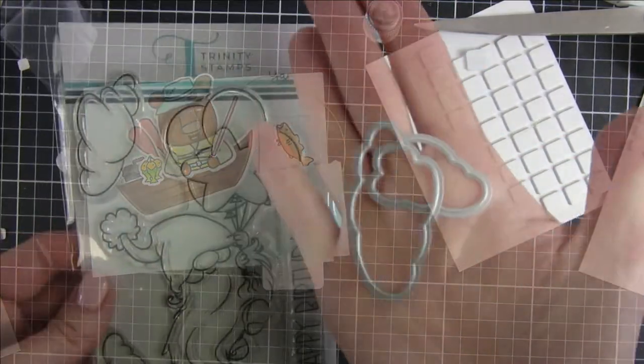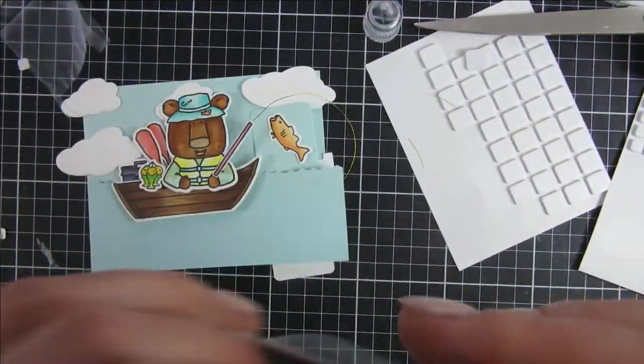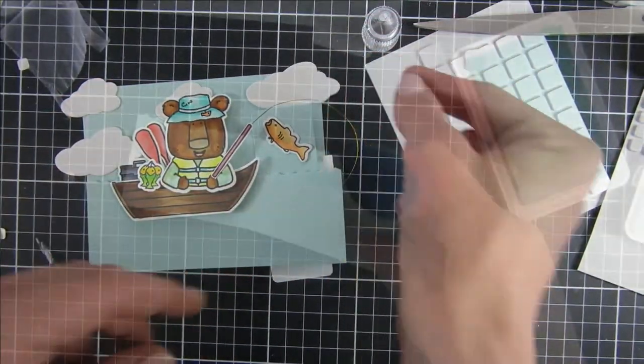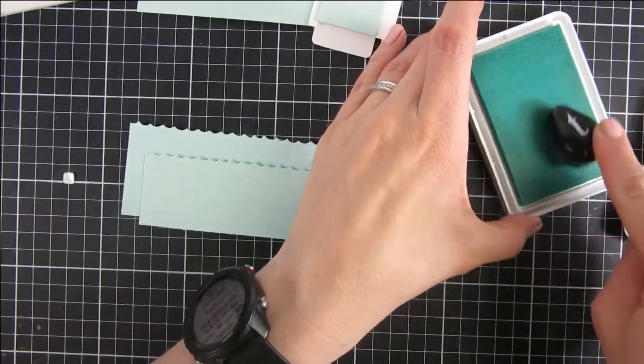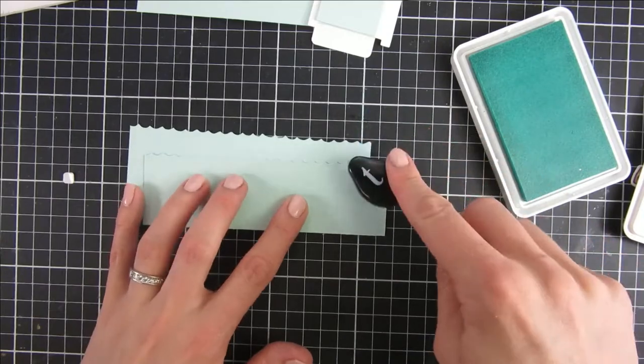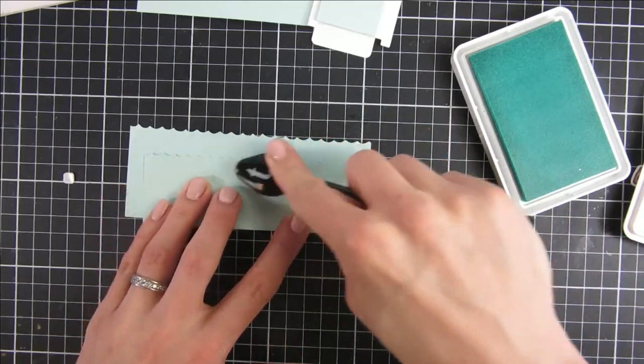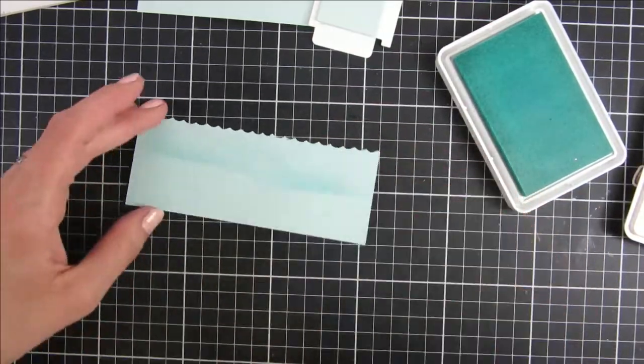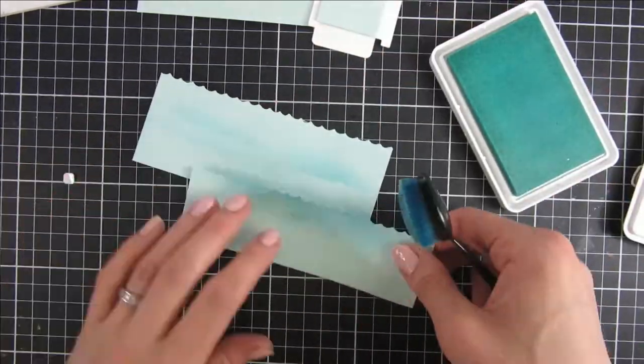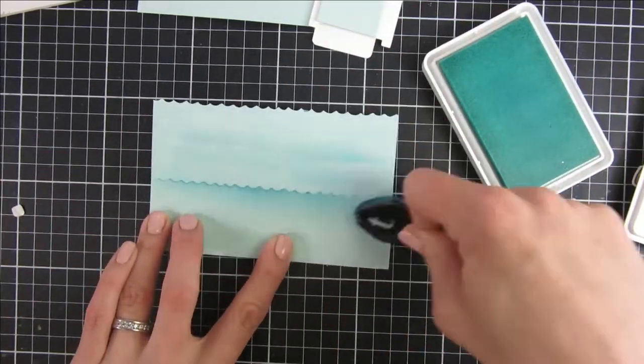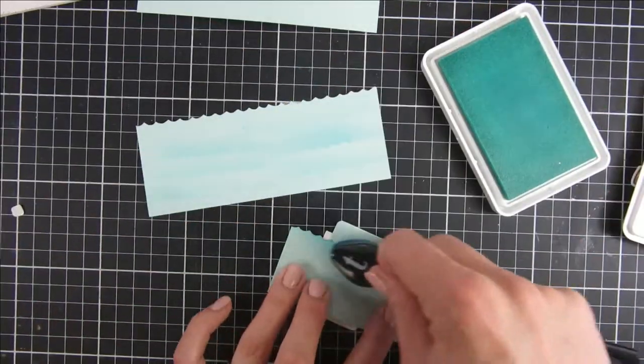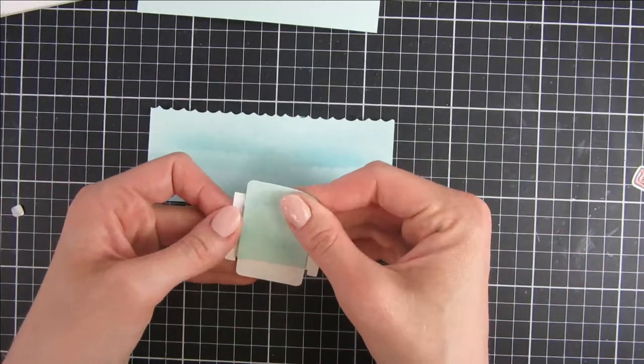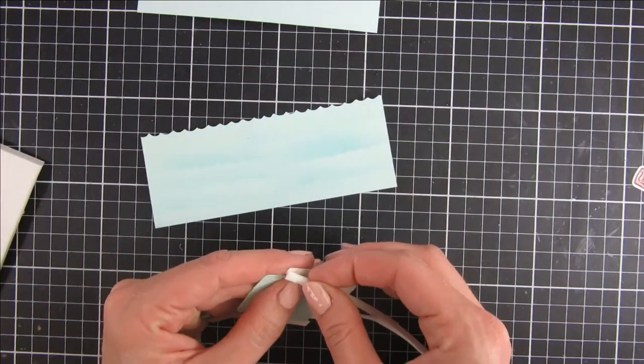Before I adhere everything, I also took a couple of dies from another newly released die set from Trinity Stamps. I took the cloud from the Up Up and Away stamp set. I wanted some contrasting colors here so I just did some more waves so it got a little bit more of a movement. I am super happy with how that turned out. I did the same thing to our little flap here so everything coordinates.